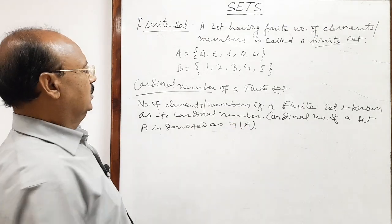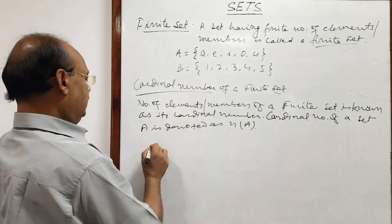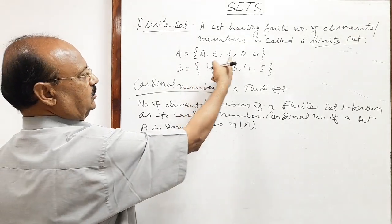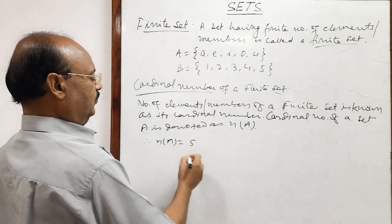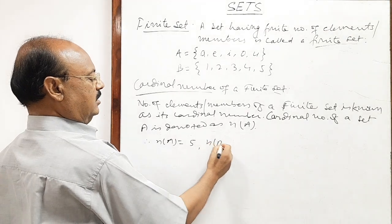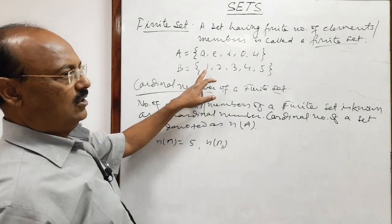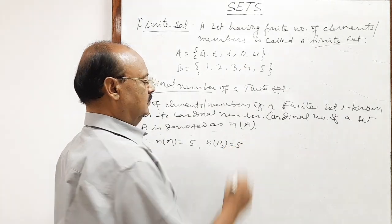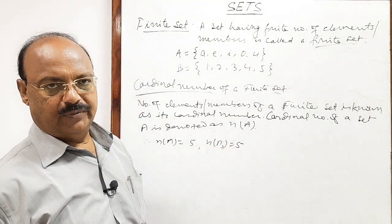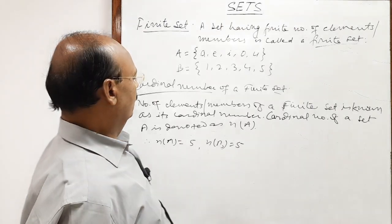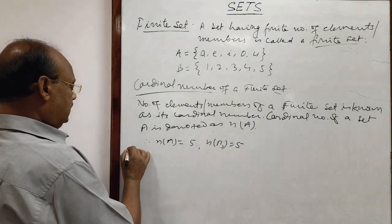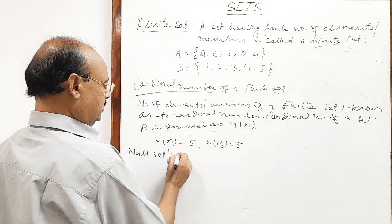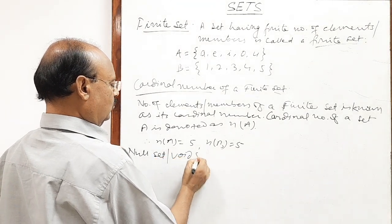In our examples, n(A) — where A is the vowels — is equal to 5, since there are five elements: A, E, I, O, U. And the cardinal number of set B is also 5, since it has elements 1, 2, 3, 4, 5. So we can understand what a cardinal number is.